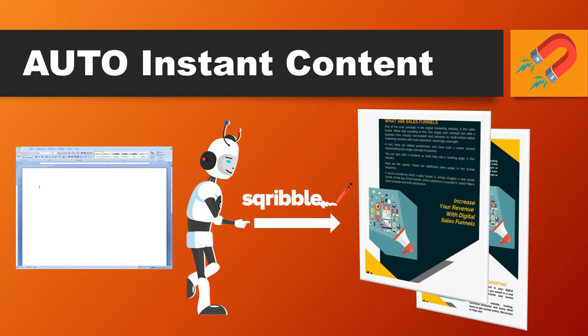This is a massive feature of Scribble. Scribble will allow you to populate your entire e-book with automatic instant content — this is the big one. They've got an incredible content engine, and with just a few clicks it's going to fill out your entire e-book.